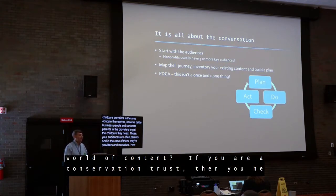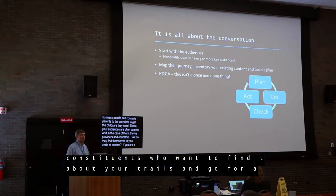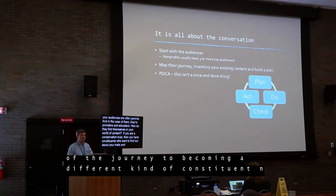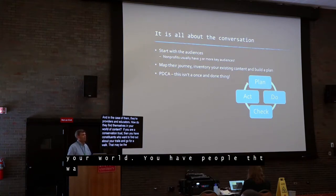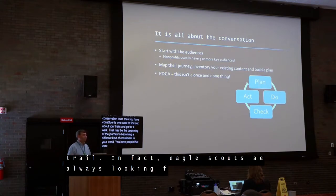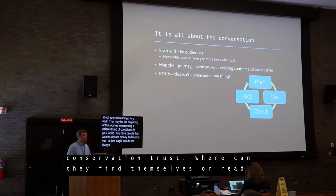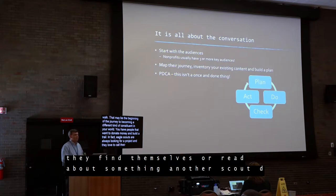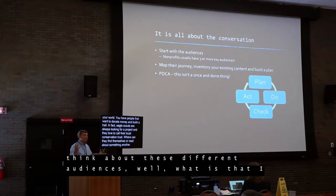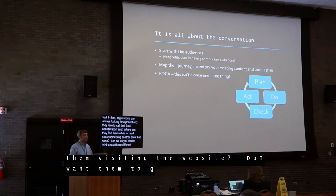If you're a conservation trust, you have constituents who just want to find out about your trails and go for a walk — and that may be the beginning of their journey to becoming a different kind of constituent. But you also have people who want to donate money, help build a trail, or Eagle Scouts looking for a project. Where can they find themselves or read about something another scout had done? As you start to think about these different audiences, you ask: what is it that I want to happen as a result of them visiting the website?